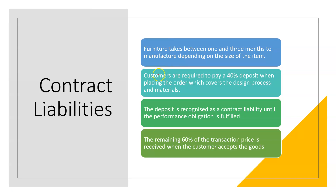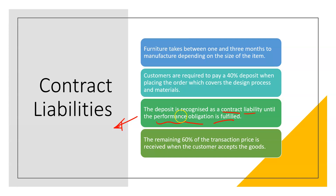Moving on to contract liabilities: furniture takes between one and three months to manufacture depending on the size of the item. Customers are required to pay a 40% deposit when placing the order, which covers the design. This is deferred income - the point is you have a job to do and haven't quite finished, so you can't recognize it as revenue. The deposit is recognized as a contract liability until the performance obligation is fulfilled. You cannot recognize that income until the furniture job is complete - and then you get the 60%. So there's a risk that revenue might be overstated.